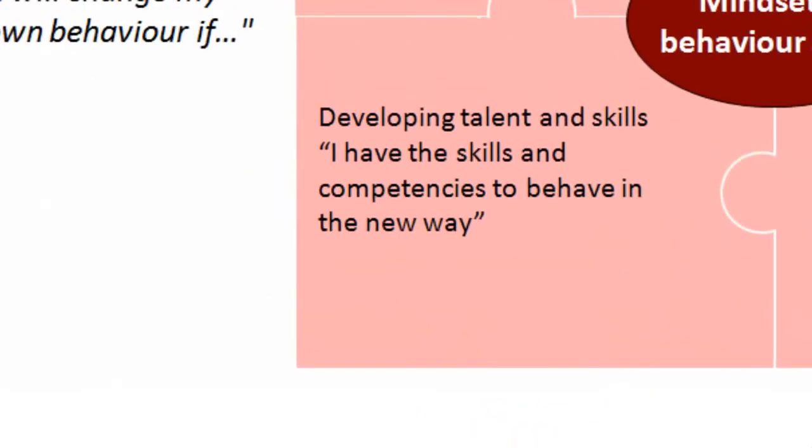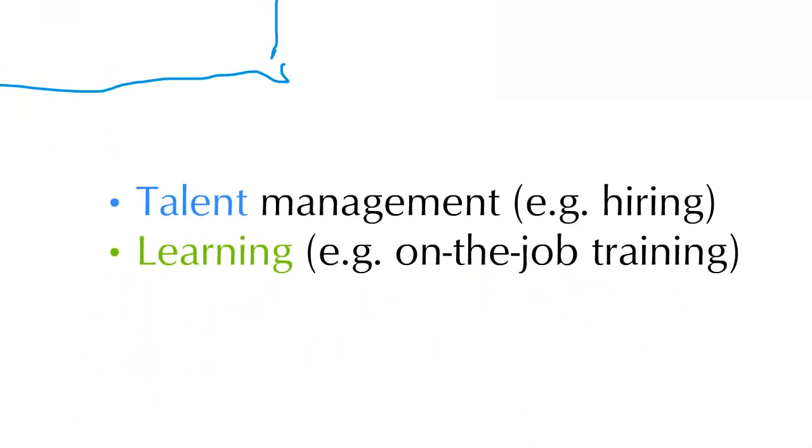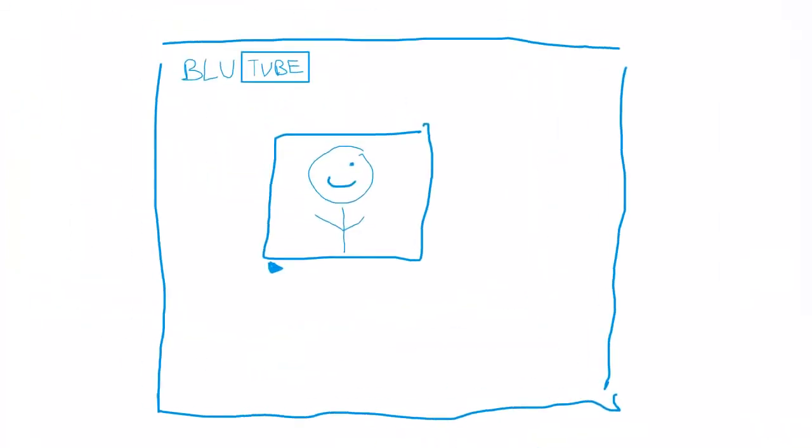The last part is developing talent and skills. If you don't give people the new skills and capabilities to act in the way that you're asking them to do, it's going to inevitably lead to anxiety. But there are ways that you can manage this. You can look at your talent management. Have you hired the right people with the right skills to undertake the new behaviour? You can also think about learning. Could you give people on the job training? Could you send them off to a training course? Could you send them an informational leaflet? In Harold's case, what they did is they made a short online video and posted it so that all the staff could understand why this was important for patients and also what they needed to change in order to improve things.